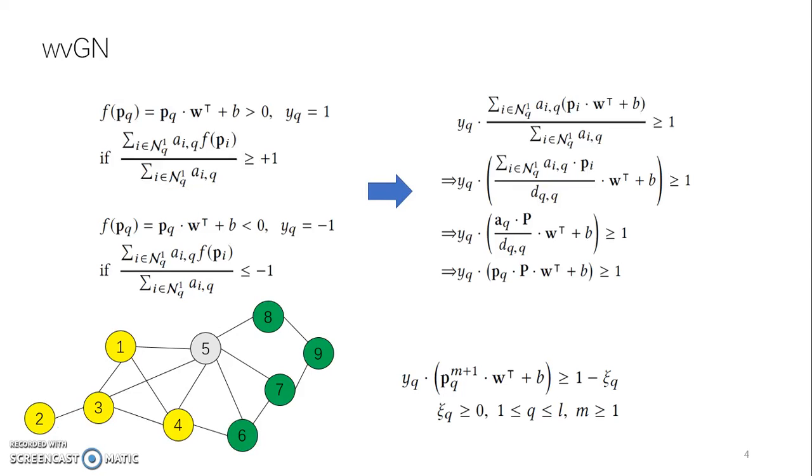Otherwise, we give it the yellow class label. Therefore, the two inequalities can be combined as this formula to classify. Cases that fall between minus 1 and 1 will introduce the slack variable.